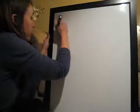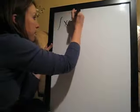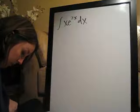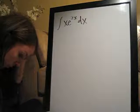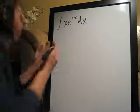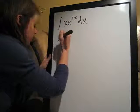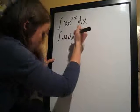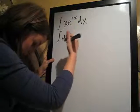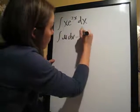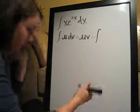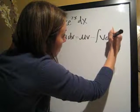So this problem is xe to the 2x dx. And the formula that we're going to be working with is u dv, the integral of u dv, is equal to uv minus the integral of v du.